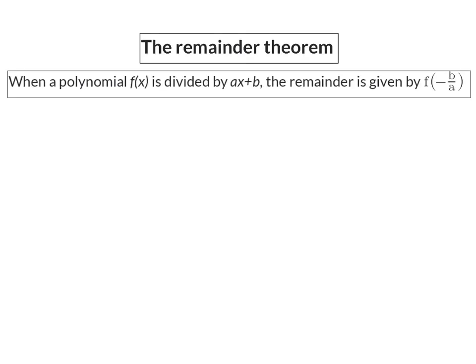The first of these two theorems is the remainder theorem, and it sounds like this. When a polynomial f(x) is divided by ax plus b, the remainder is given by f of minus b over a.